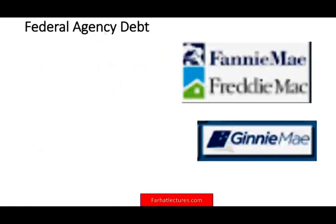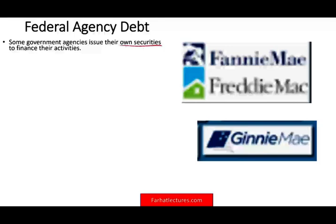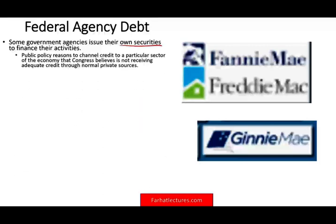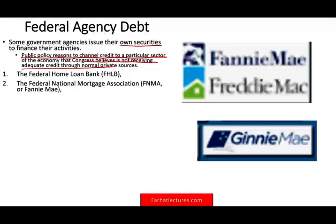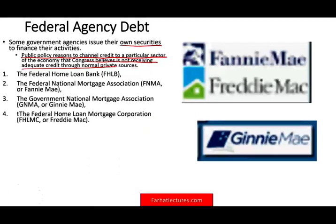We also have other types of government or federal agency bonds — think Fannie Mae, Freddie Mac, and Ginnie Mae. These are government agencies that issue their own securities to finance their activities. Congress creates federal agencies to raise money for sectors — specifically housing — that it believes are not receiving adequate credit through normal private sources. Examples include the Federal Home Loan Bank, the Federal National Mortgage Association (Fannie Mae), the Government National Mortgage Association (Ginnie Mae), and the Federal Home Loan Mortgage Corporation (Freddie Mac). They issue bonds and take that money to finance housing activity.